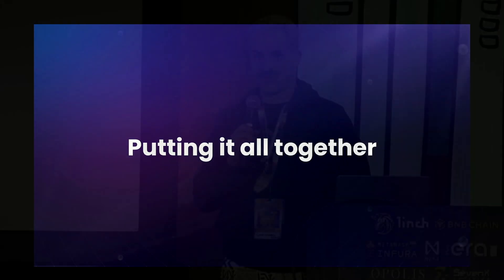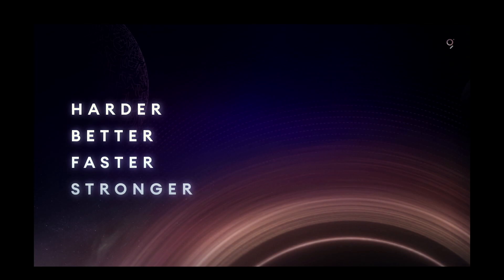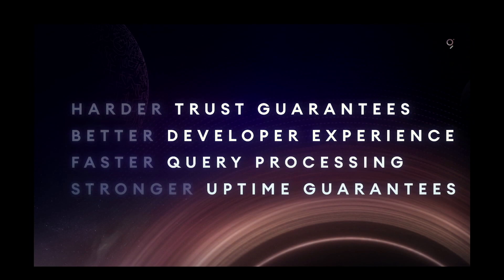In a nutshell, that was a very quick rundown. I'm happy to share the slides — all these core dev teams also have their own talks, so I recommend checking those out. As a summary: multi-chain network support with Arbitrum, Solana, Avalanche, Gnosis Chain, and Ethereum mainnet; Firehose and Substreams for speed; the Graph Client; GraphCast; Indexer Launchpad; Messari subgraphs; scalar payments; auto Agora; and verifiable queries. In the end: harder trust guarantees, better developer experience, faster query processing, and stronger uptime guarantees. Thank you and happy hacking!